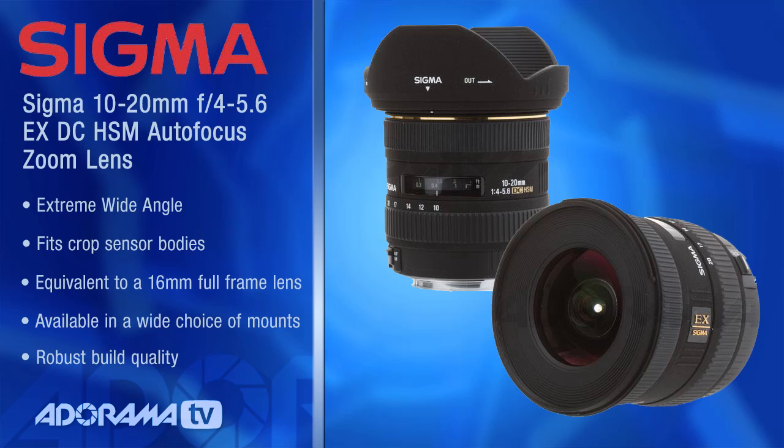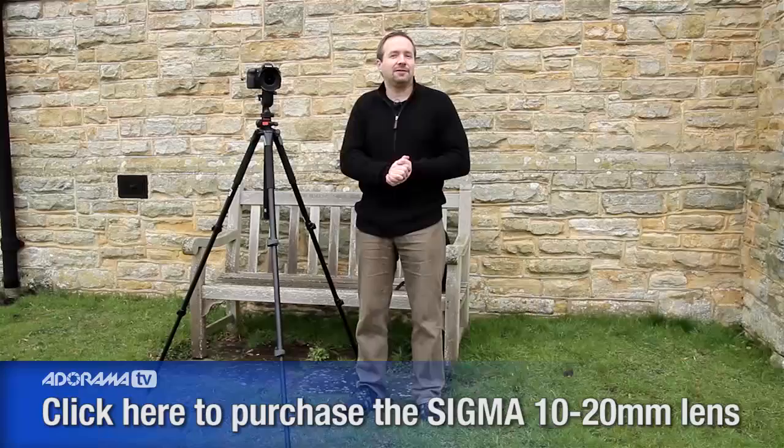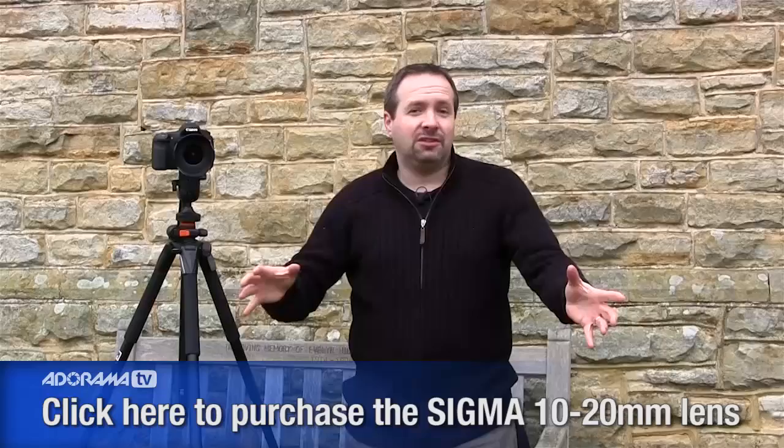Why am I using this lens? Well firstly it's an extreme wide-angle lens — 10 millimeters is the equivalent of 16 millimeters on a full-frame camera. Because it's a Sigma lens you can get this lens for pretty much whatever camera brand you have, and the quality is pretty darn good too. I've had this one for a number of years and it's survived life's little knocks and bumps.